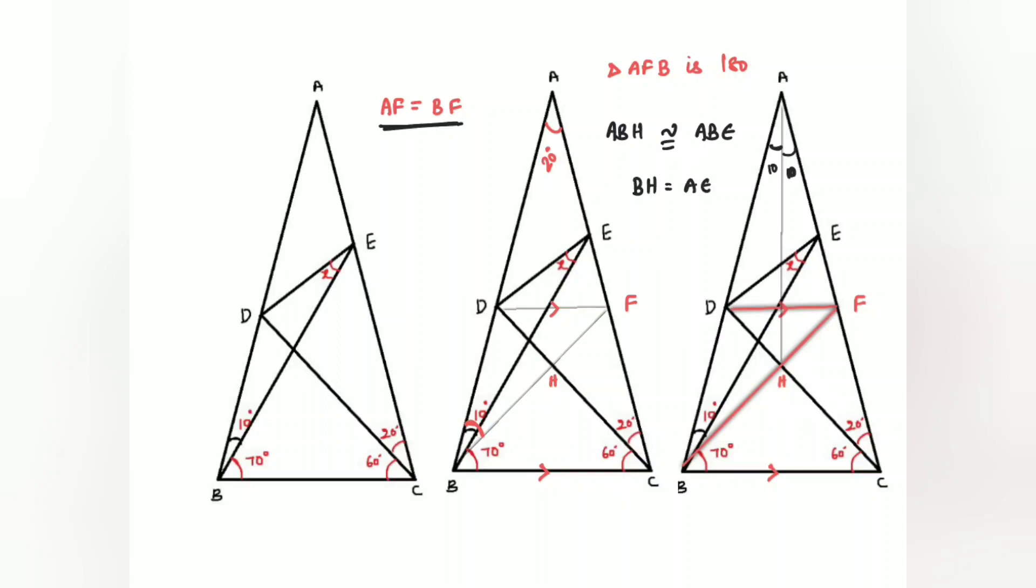If AF equals BF, and AE equals BH, if AE equals BH, therefore these two sides are also same. So I can say EF is equals to HF.